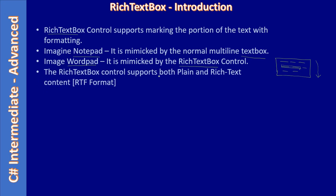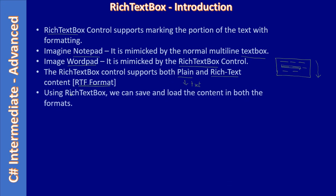The rich text box control supports both plain text content, like a text box, as well as rich text content. The rich text content is called RTF format — rich text format — and plain text is called TXT content. Using the rich text box we can save and load content in both formats. In the rich text format you can apply formatting for a specific portion of text: you can set a color, a different font, or set bold and italic.